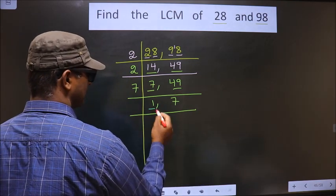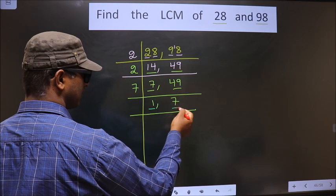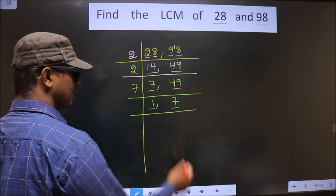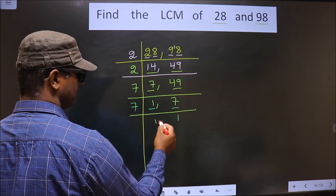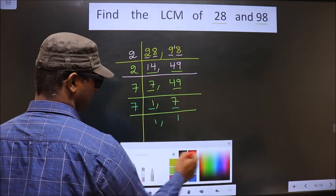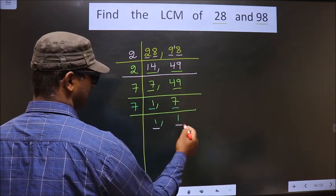Now here we got 1, so we focus on the next number which is 7. 7 is a prime number, so we take 7 times 1 equals 7. Now we got 1 in both places.